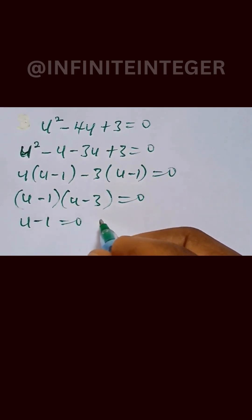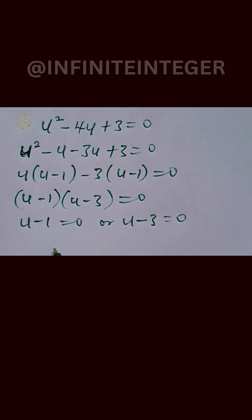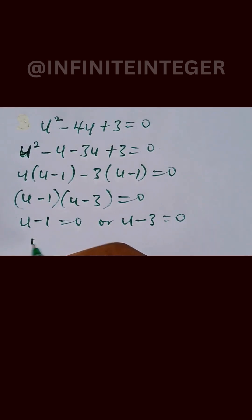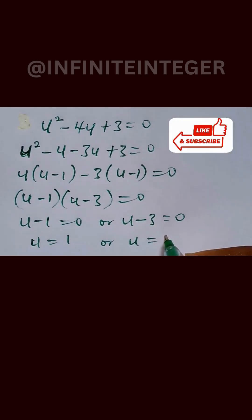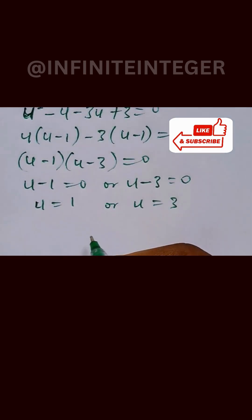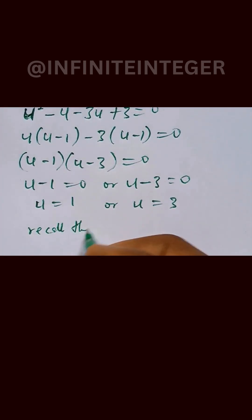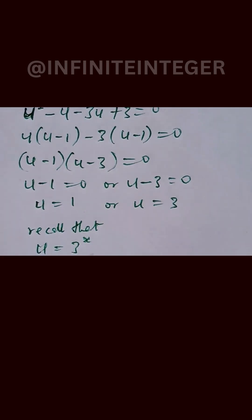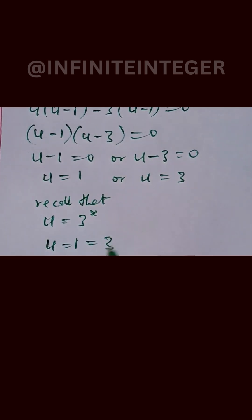So we have u minus 1 equals 0 or u minus 3 equals 0, giving us u equals 1 or u equals 3. Since u equals 3 raised to power x, for u equals 1, we have 1 equals 3 raised to power x.